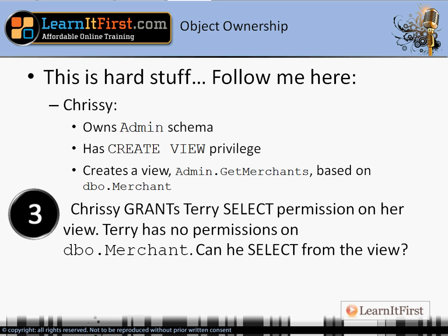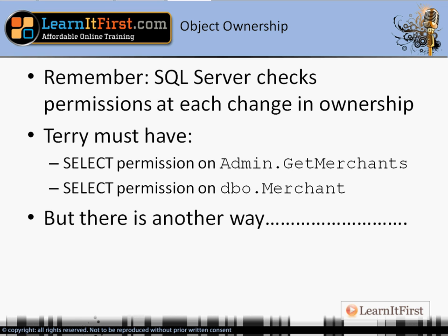Chrissy gives Terry the SELECT permission on her view. Terry has no permissions on dbo.merchant — can he select from Chrissy's view and get the actual data? No, but this time it's for a different reason. SQL Server checks permissions at every change in ownership. Terry needed both the SELECT permission on admin.get_merchants — which he had — and SELECT permission on dbo.merchant — which he didn't have. However, there is another way Chrissy could have helped him out.